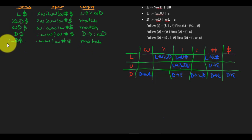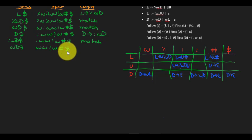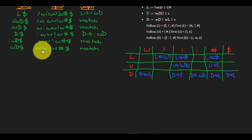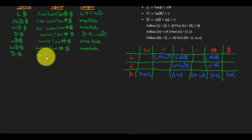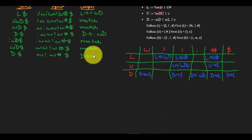Colon and colon is a match, so we pop off colon and discard colon from the string. So we get WD dollar, WW! W# dollar. W and W is a match, so we again pop it off and discard from the string, and we're left with D dollar, WW# dollar. D on W uses the rule D goes to WL.